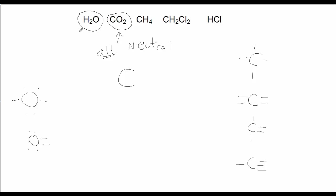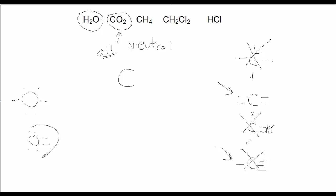Because I only have two oxygens in CO₂, I can rule out these forms of carbon that need three atoms connected to it, and the one that needs four. What's left is carbon with two double bonds, and carbon with a triple bond and a single bond. Looking at the pieces of oxygen, none of them have a triple bond, so I can rule that out. The only one that seems to fit is oxygen with a double bond, which fits nicely with carbon having two double bonds.